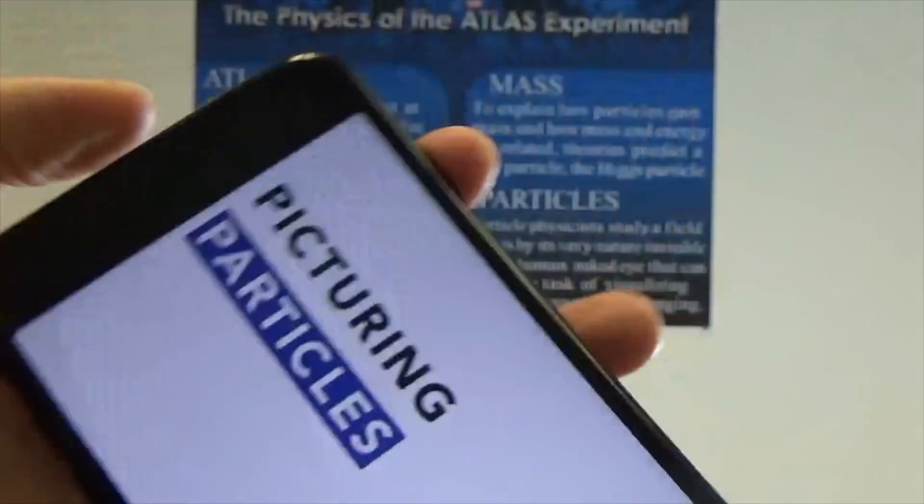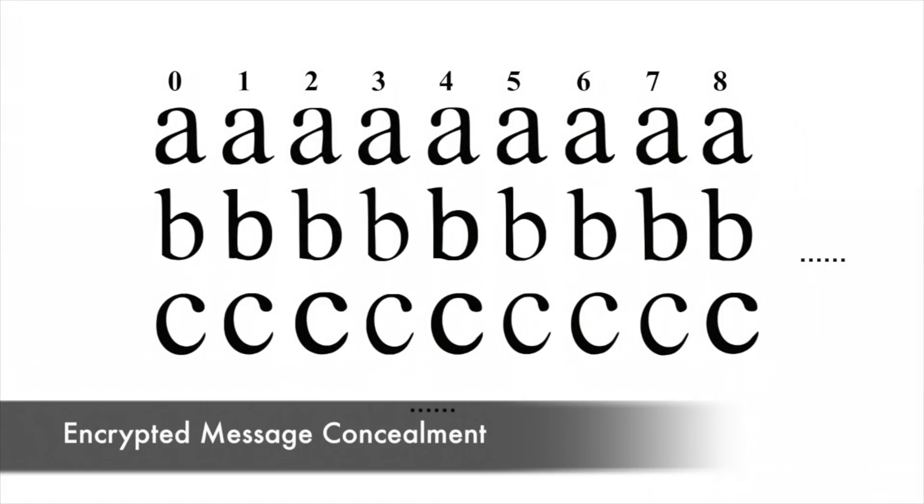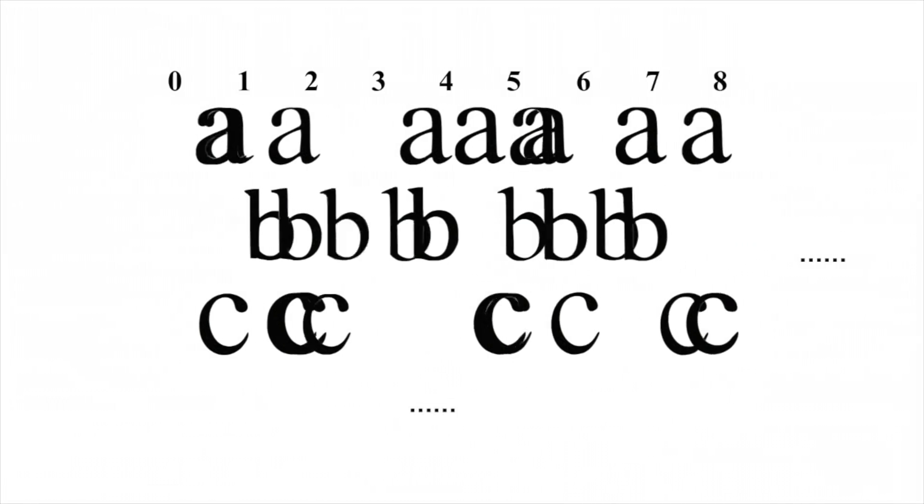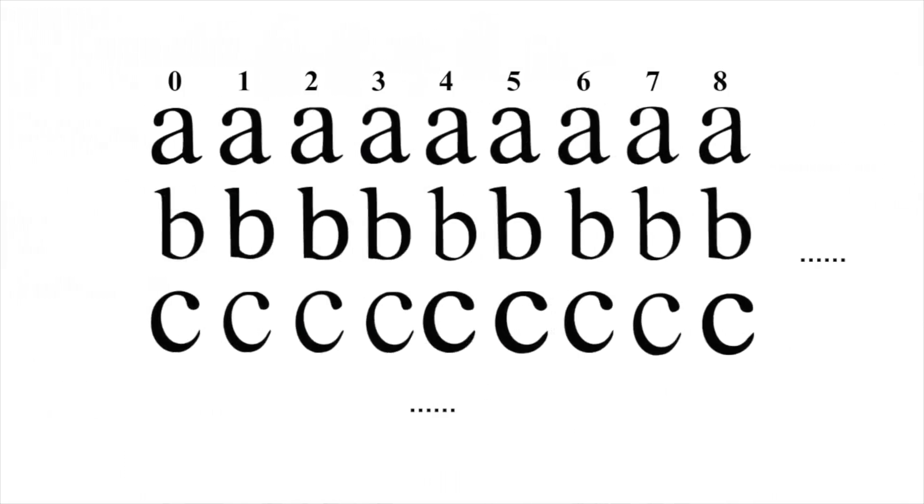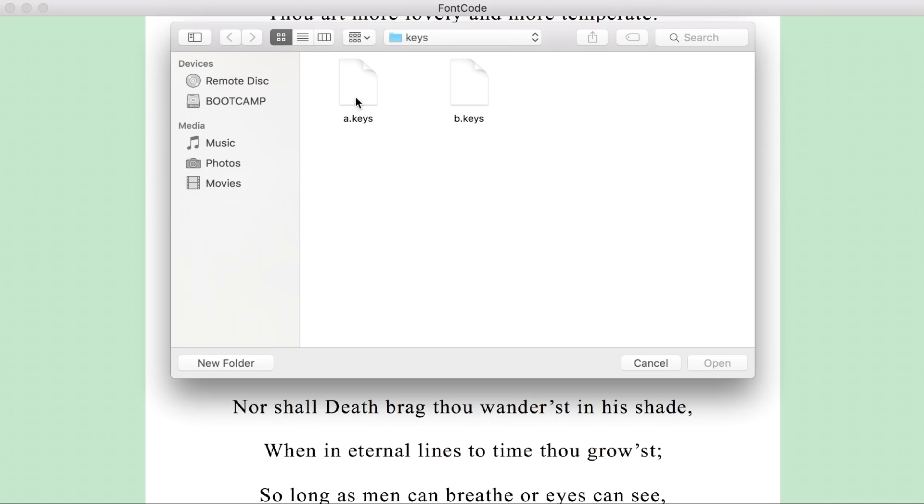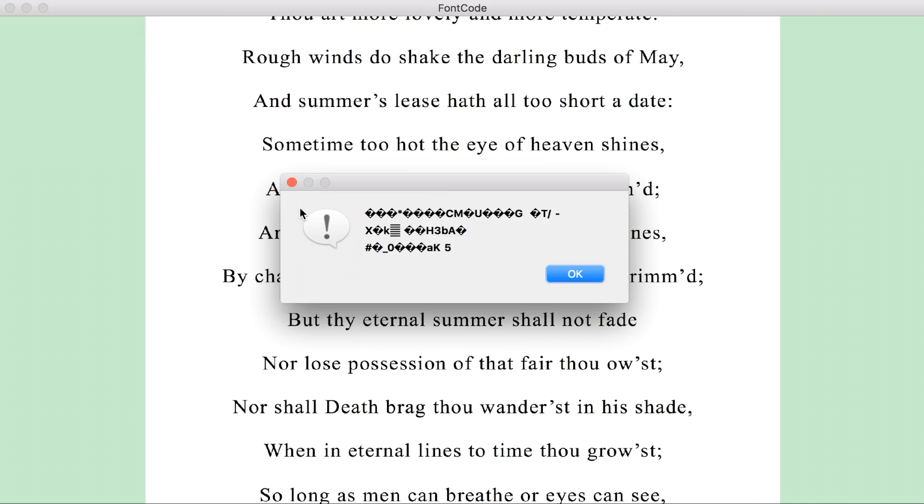Our method further enables a basic encryption scheme for embedded messages. Our codebook can be permuted using a key file in the encoding step, and the decoding step must agree on the same key in order to extract the hidden message correctly.